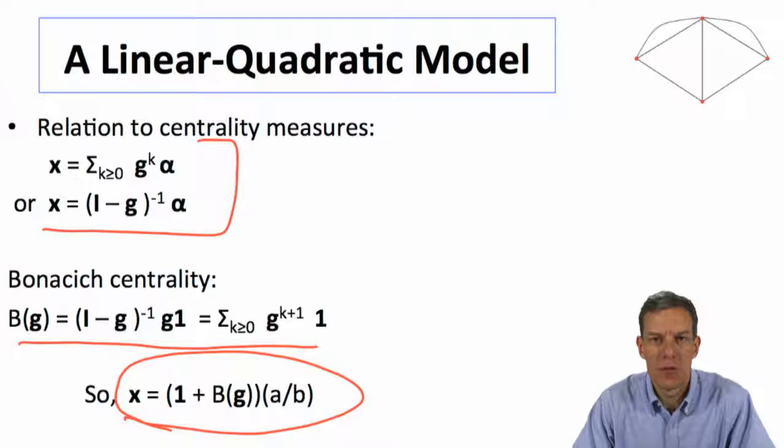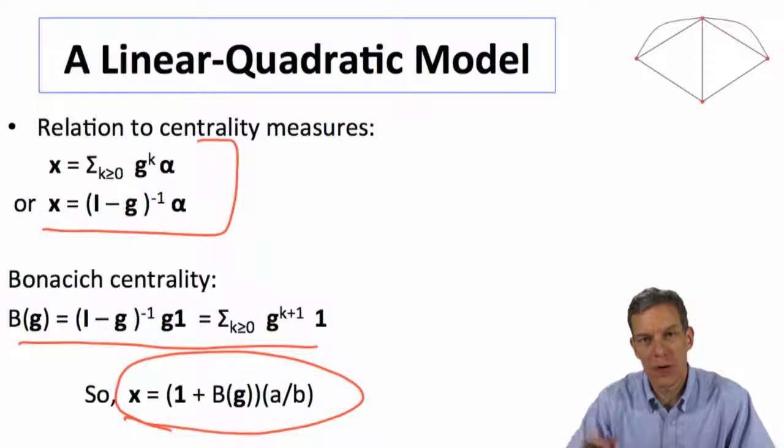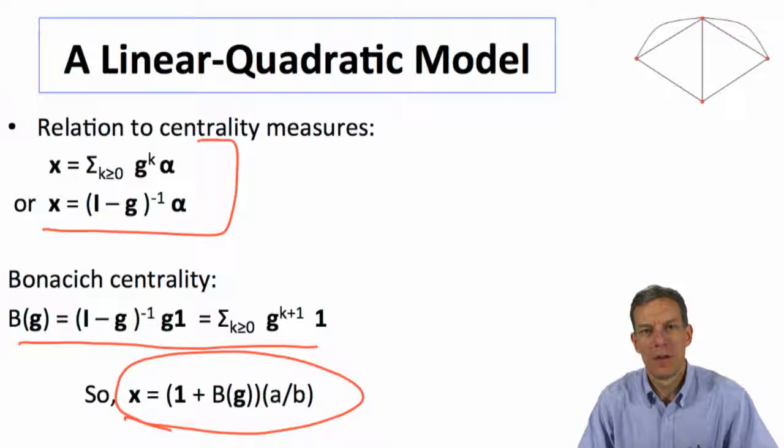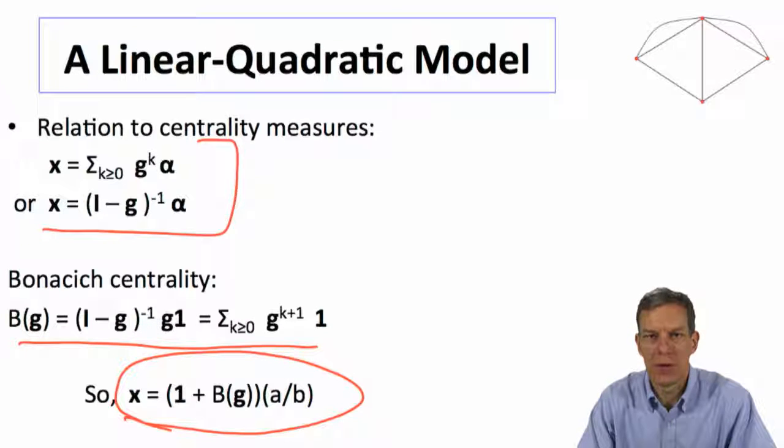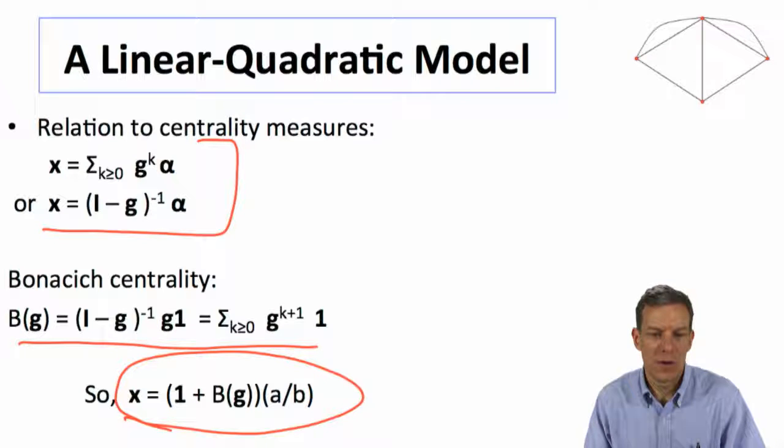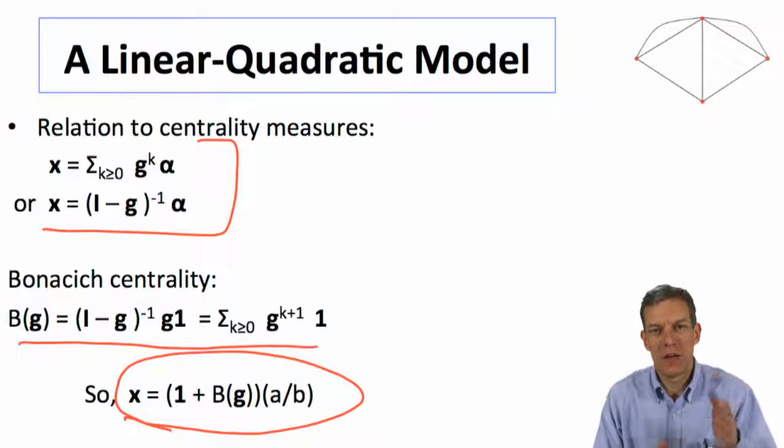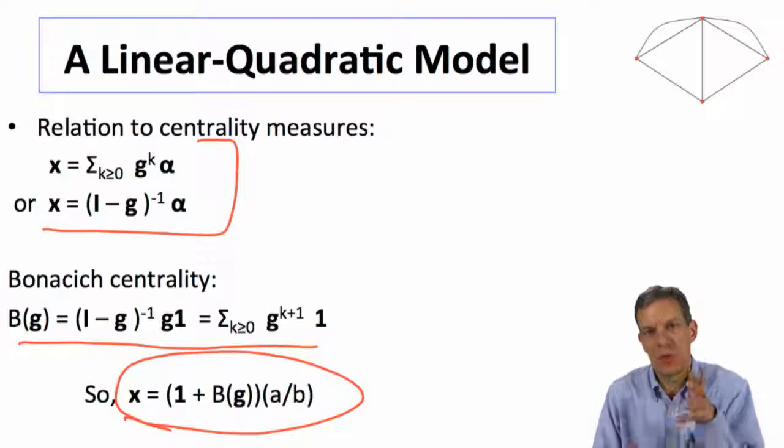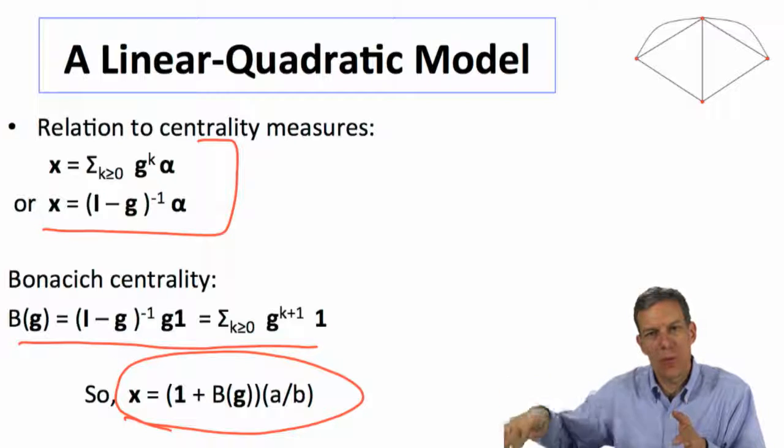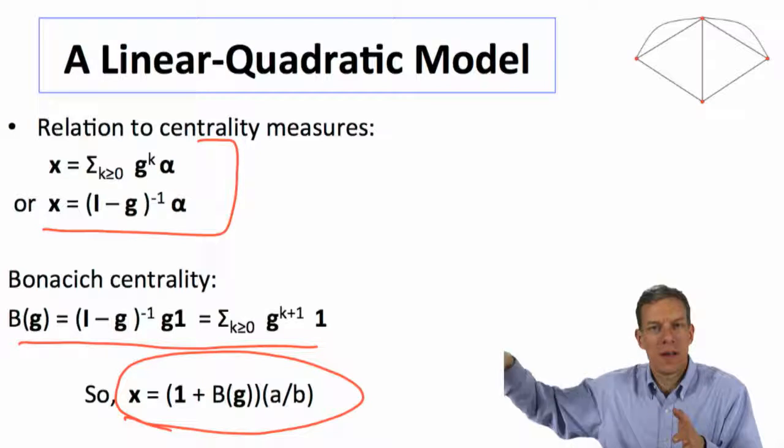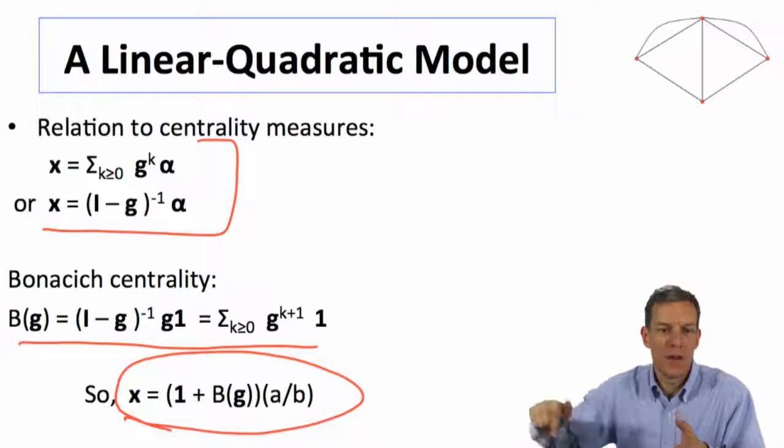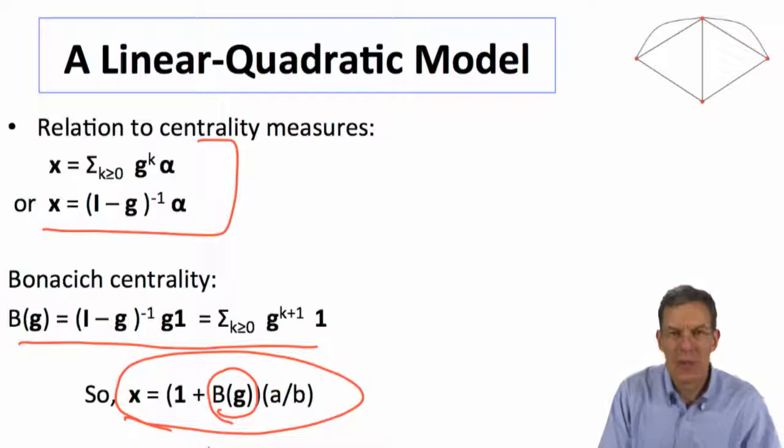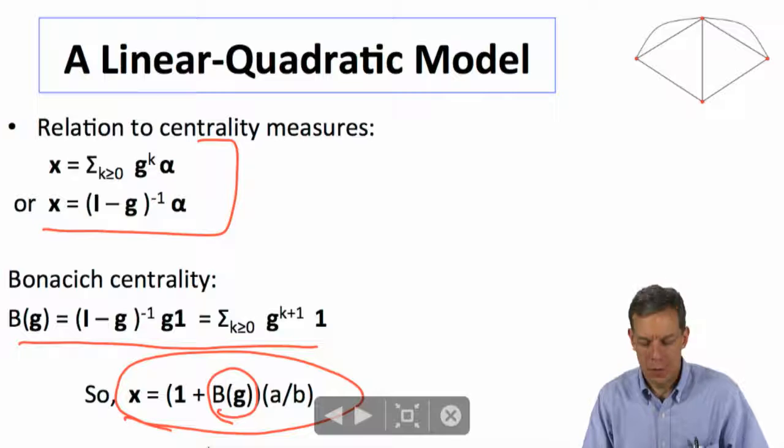So in fact, what we can say is the action that any individual will take in one of these linear quadratic games of complementarities is something which is proportional to their Bonacich's centrality. So higher Bonacich's centrality, higher actions. So we've got everybody takes an action a over b to begin with, which is just sort of what they would do in isolation with no network. And then the extra network effect adds in these complementarities. And how much extra action they get here depends on their Bonacich's centrality in the network.